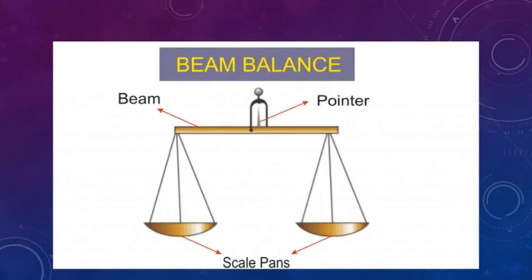A beam balance consists of three main parts: the beam, the pointer, and the scale pan. When both sides have equal weight, the pointer is at the center point. When the weight on one side increases, the pointer moves toward that side. In this way we measure the weight of an unknown object. In market shops we always see the beam balance used for measuring purposes.